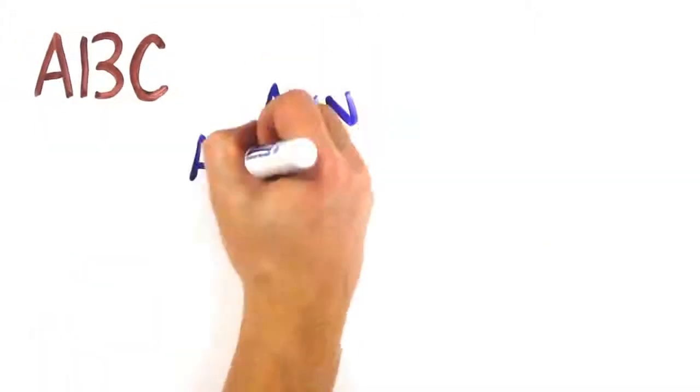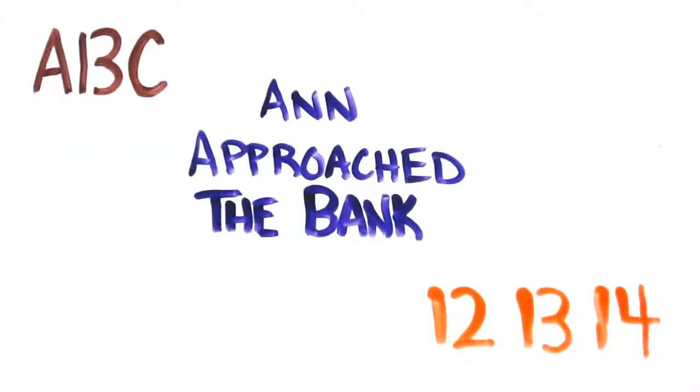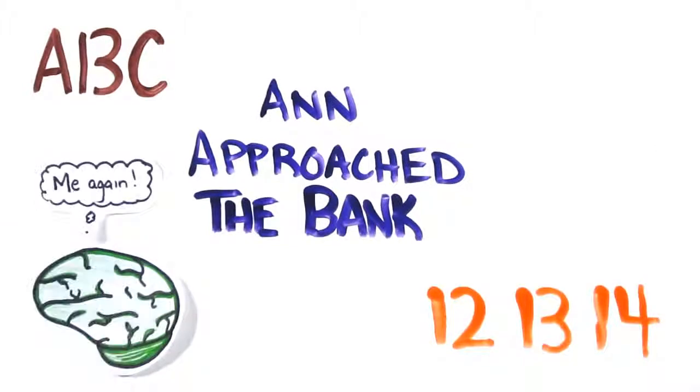In a similar way, System 1 generates context without you knowing. Reading each of the following may seem fairly simple: A, B, C, Anne approached the bank and 12, 13, 14. But your brain actually interpreted these ambiguous statements without you ever knowing.